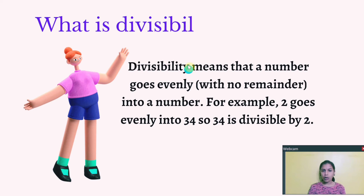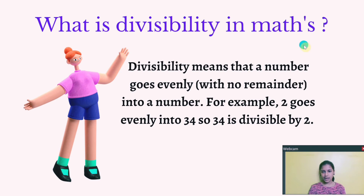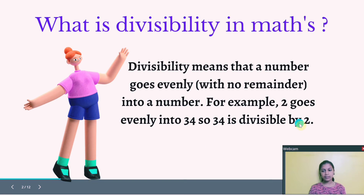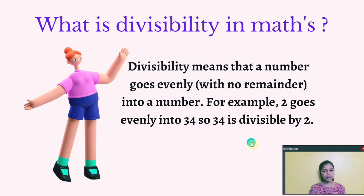let's check what is divisibility in maths. Divisibility means that a number goes evenly with no remainder into a number. For example, 2 goes evenly into 34. So 34 is divisible by 2.